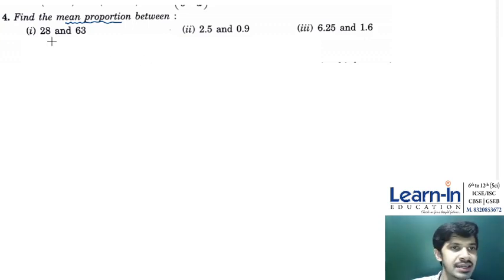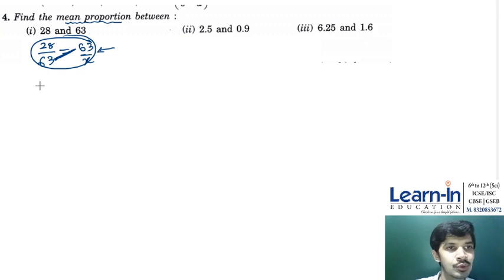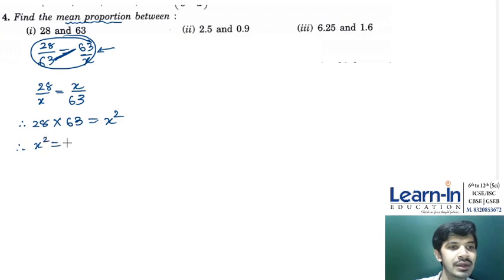We write 28 upon 63, and then that number as 28 upon x for the mean proportion. So 28 into 63 is equal to x squared. The x squared value is 28 into 63.